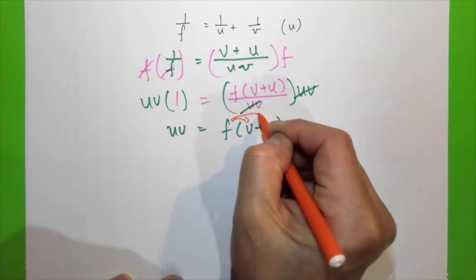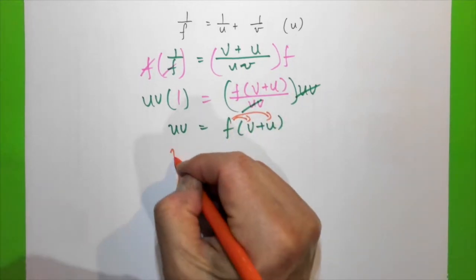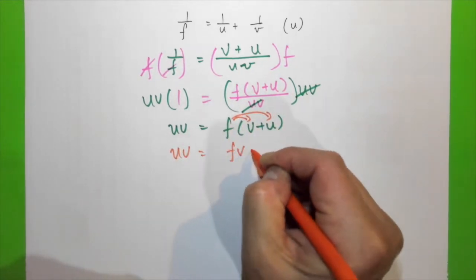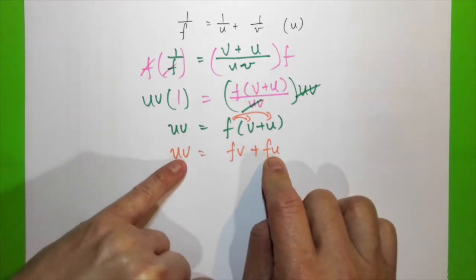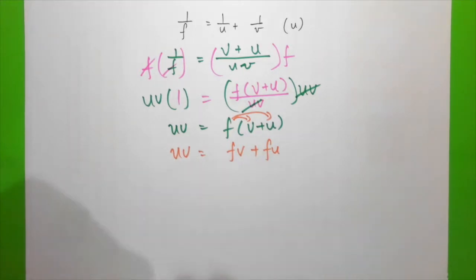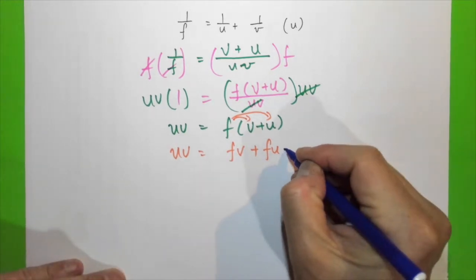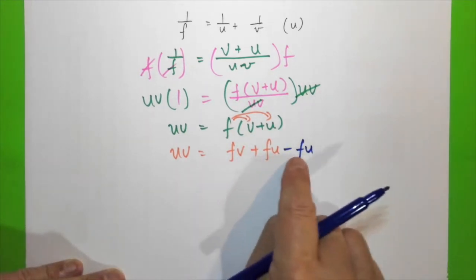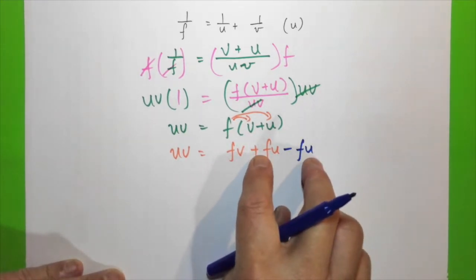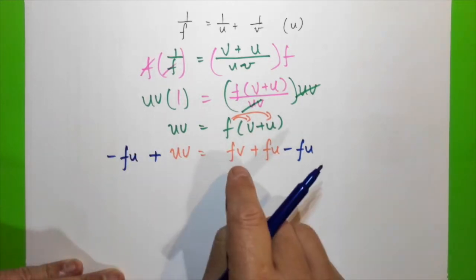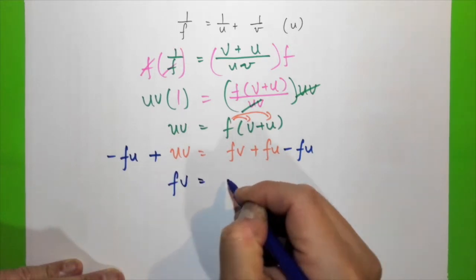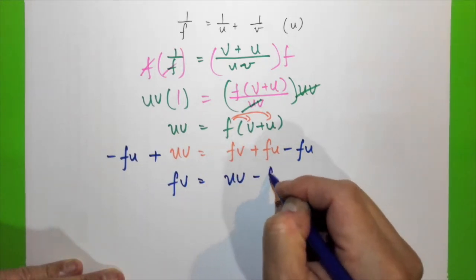Using the distributive law, we multiply through: uv = fv + fu. Now I want fu and uv on one side, so I subtract fu from the right-hand side. Rewriting: fv = uv − fu.